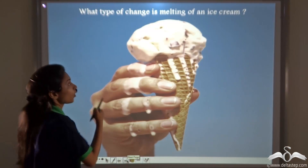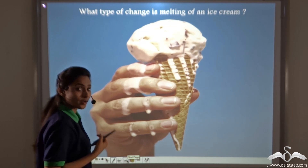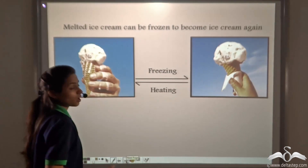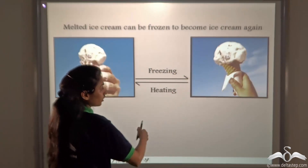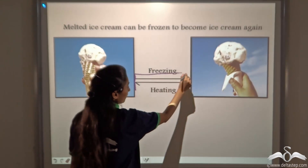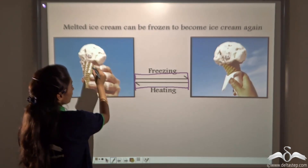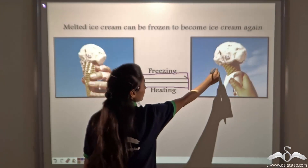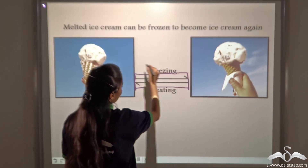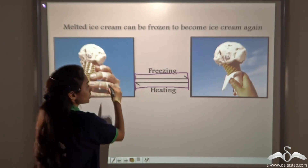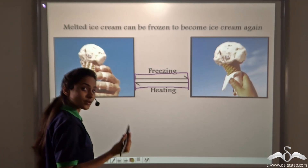Now you answer: what type of change is melting of an ice cream — reversible or irreversible? Well, melted ice cream can be frozen to become ice cream again. That is why it is denoted by a two-way arrow, as it is a reversible change. Melted ice cream can be frozen back to become normal ice cream, or frozen ice cream can be heated to melt. So this works both ways — that is why melting of an ice cream is a reversible change.